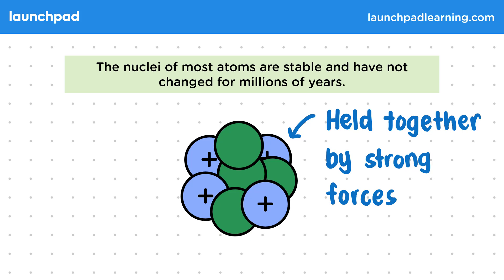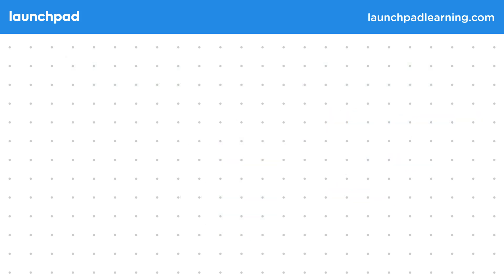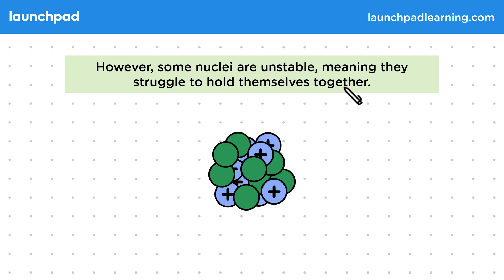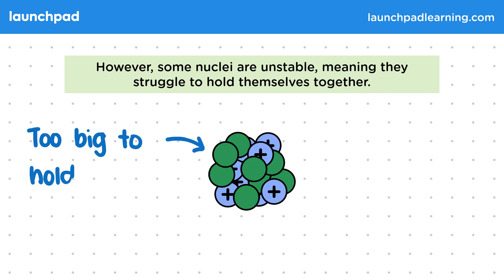But is this true for all nuclei? Some nuclei are unstable, meaning they struggle to hold themselves together. So this nucleus is unstable, as it's too big to hold together.